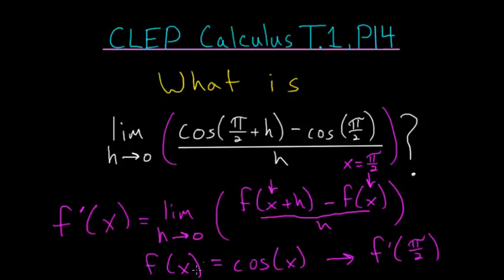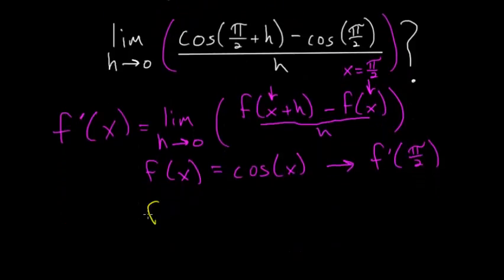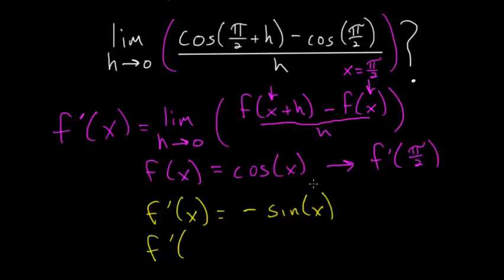And the derivative of the cosine is simply minus the sine of x. And since we have to evaluate this at pi over 2, we just have to plug pi over 2 into here for x.